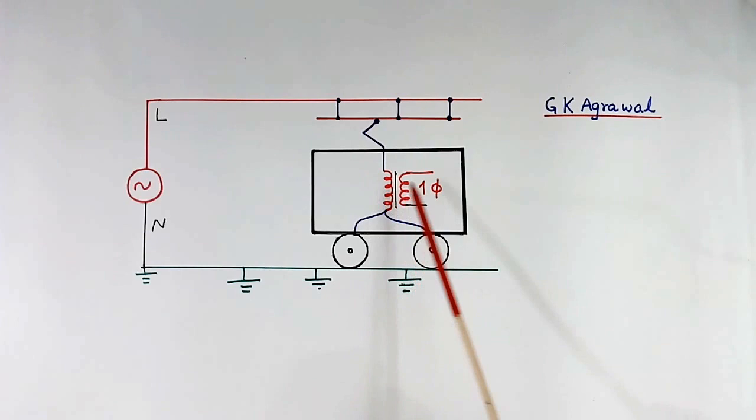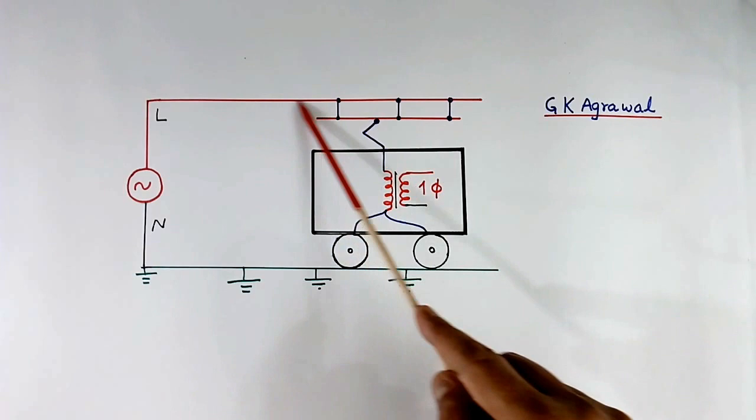These are wheels. And this is track. Track is connected to earth at many places. This is pantograph. And this is another wire, which is hanging from this main line wire.